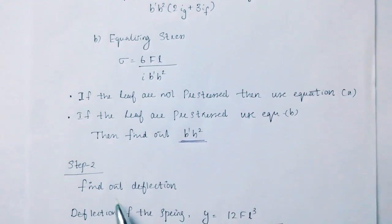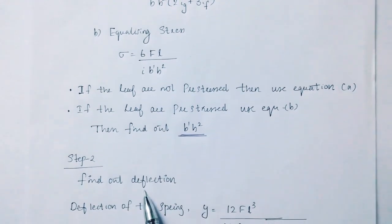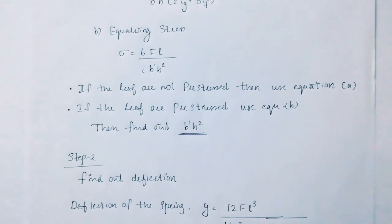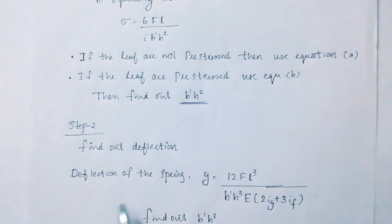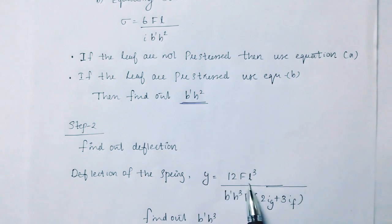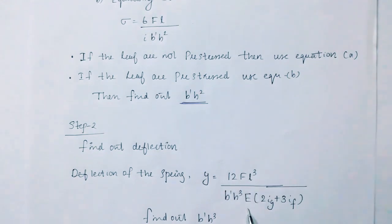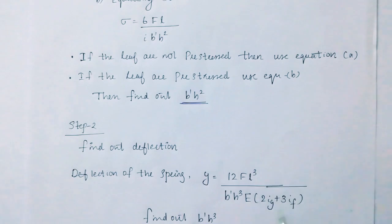Then Step 2 is to find out deflection of the spring. y equals 12fl-cubed divided by b'h-cubed into (2ig plus 3if). Find out b'h-cubed into the value.